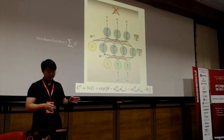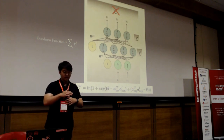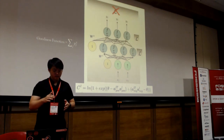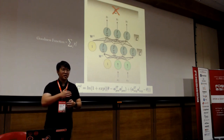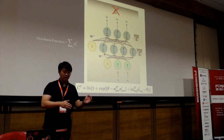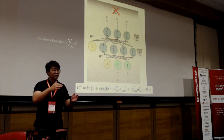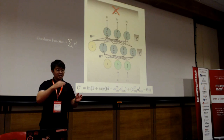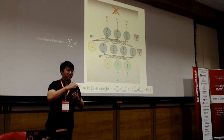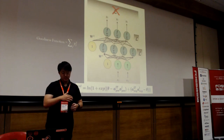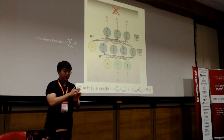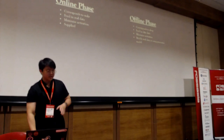This goodness function gives a goodness value for each layer. During the online phase, we want to increase the goodness value in every single layer as much as possible, so the model can differentiate real from fake data. During the offline phase — the other forward pass — we decrease the goodness value in every single layer so the model can again differentiate real from fake data.